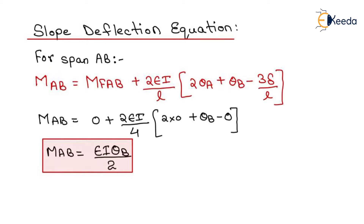We will now write the slope deflection equations for each span. For MAB, the slope deflection equation is: MF_AB + (2EI/L)(2θA + θB − 3Δ/L). For span AB the fixed end moment is 0, L = 4 m, and since support A is fixed θA = 0, and with no settlement Δ = 0. Solving gives MAB = EIθB / 2.